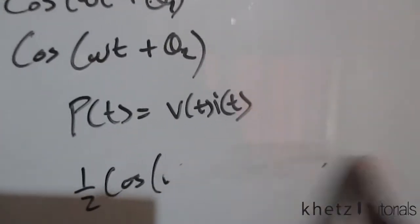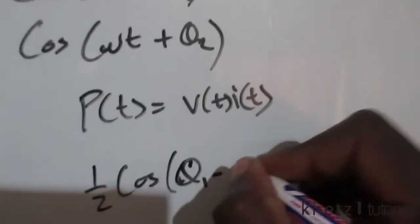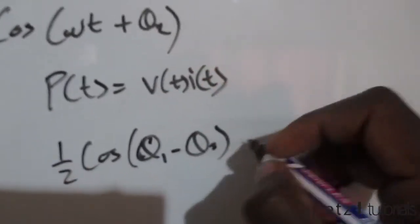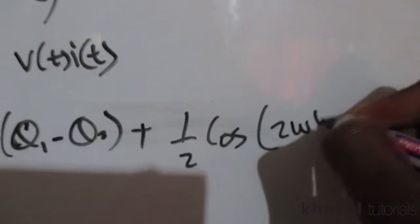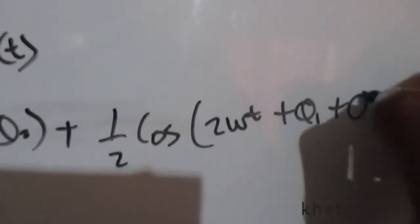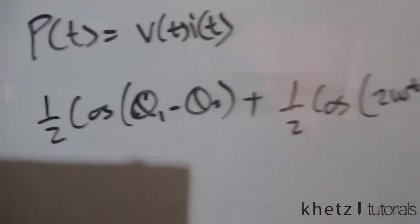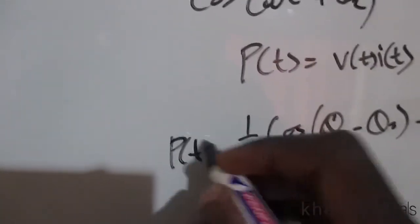Subtract omega t plus theta two, this would basically result in these cancelling out and you'd only have theta one subtract theta two. Then you'd add half of cosine, and adding these two arguments would give you 2 omega t plus theta one plus theta two. And this is basically how we formulate the formula for instantaneous power.